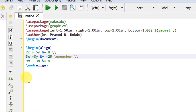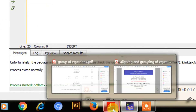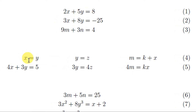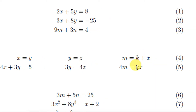Now let us consider the second example: the grouping of six equations arranged in two rows and three columns. In such a case, in the first column these two equations are aligned, in the second column these two equations are aligned, and in the third column these two equations are aligned. So how to write down these equations? Let us see that.